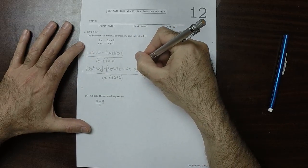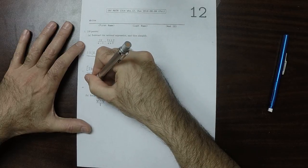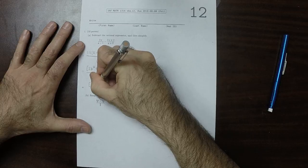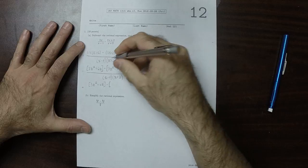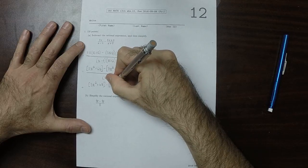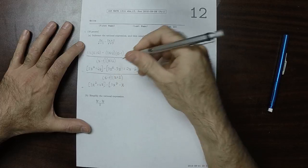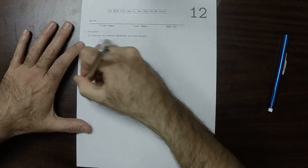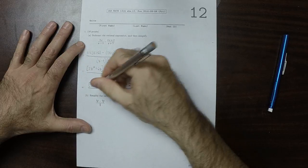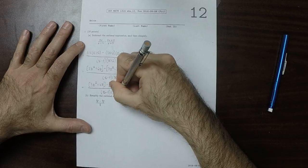Now I'll simplify this a little bit. So this will be 3x squared plus 6x and then minus 3x squared minus x minus 2, all of that over x minus 1 times x plus 2.